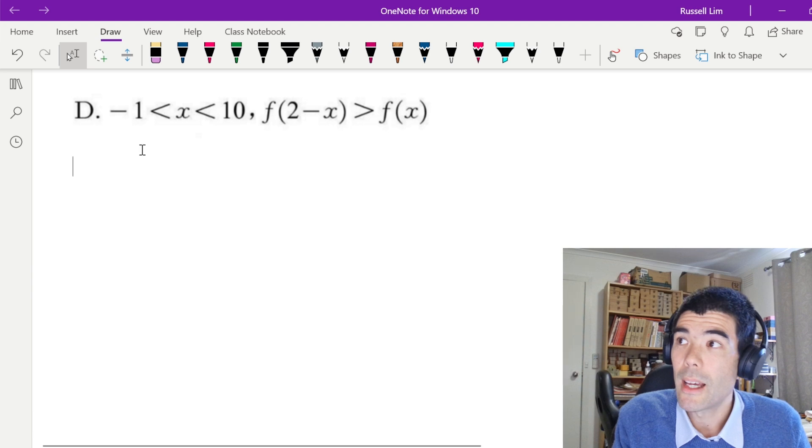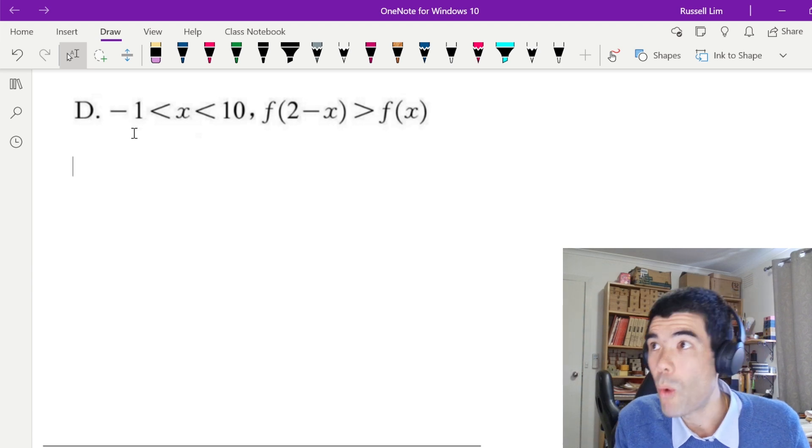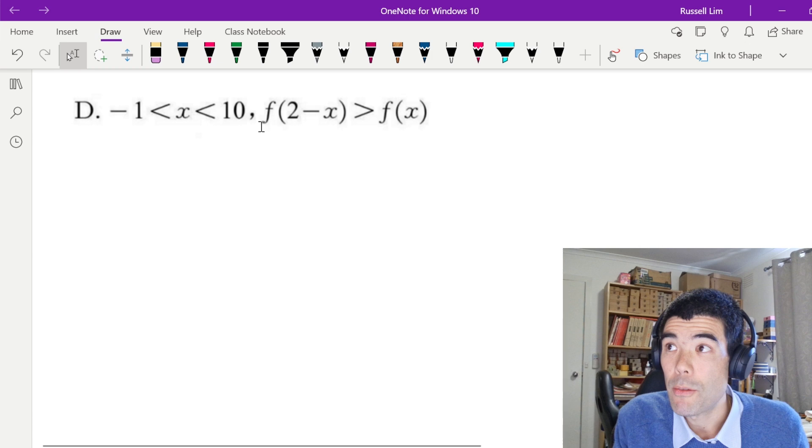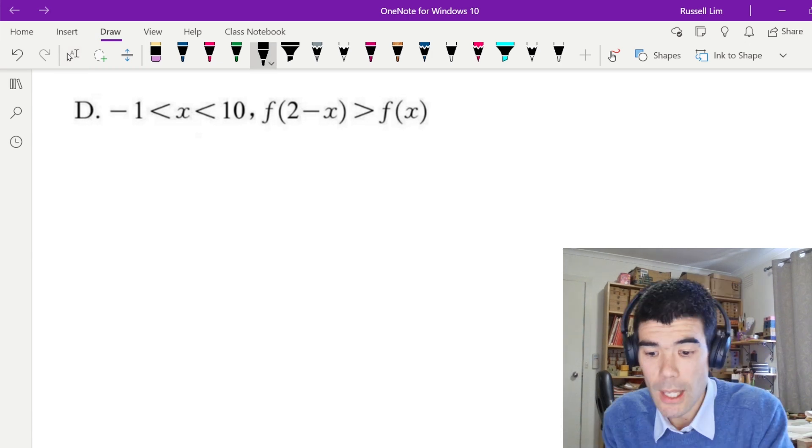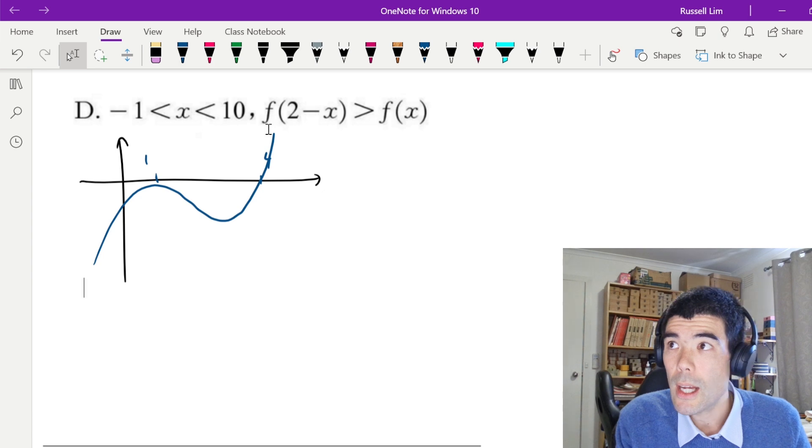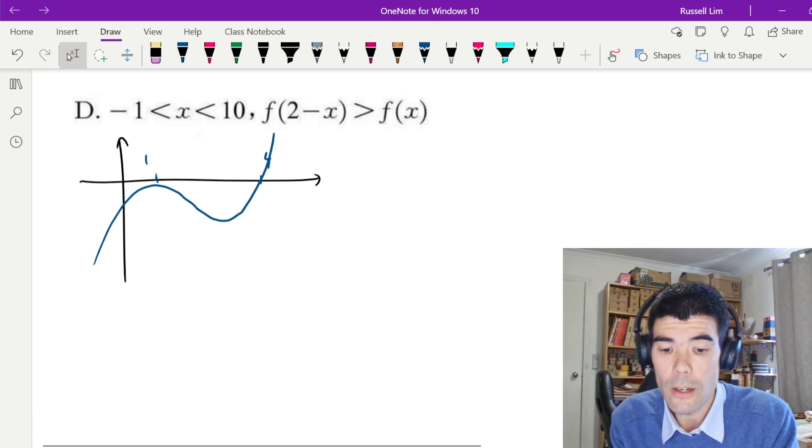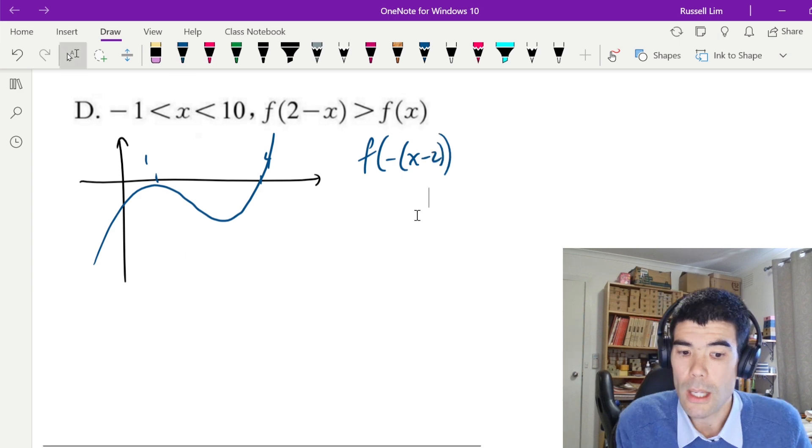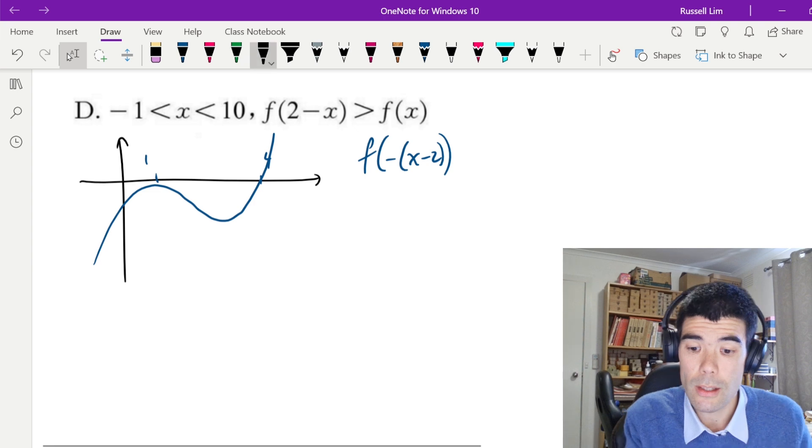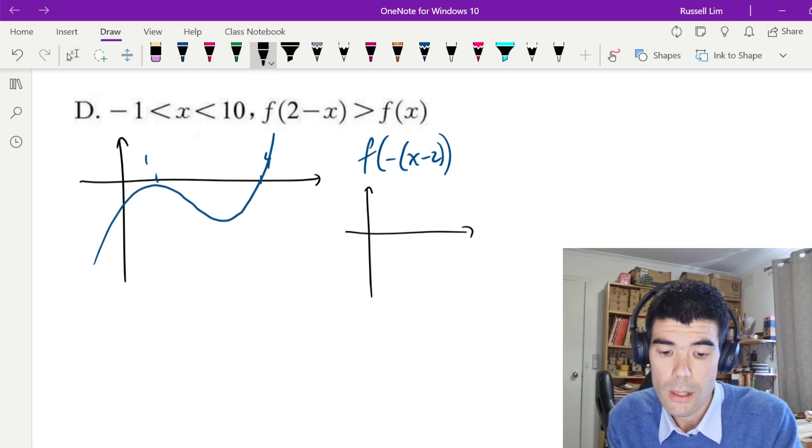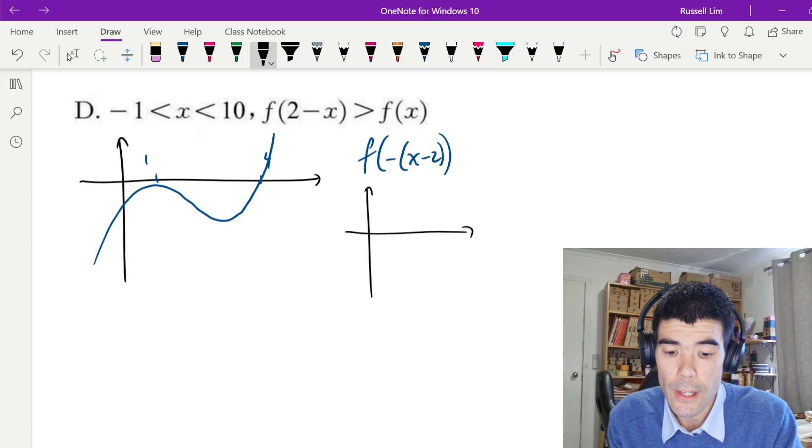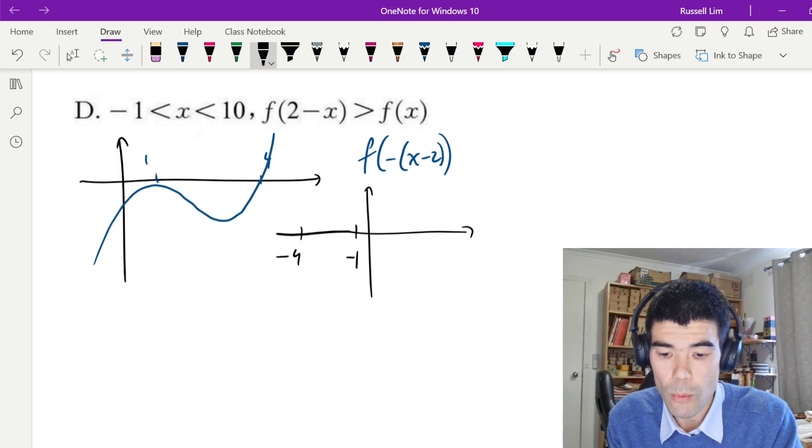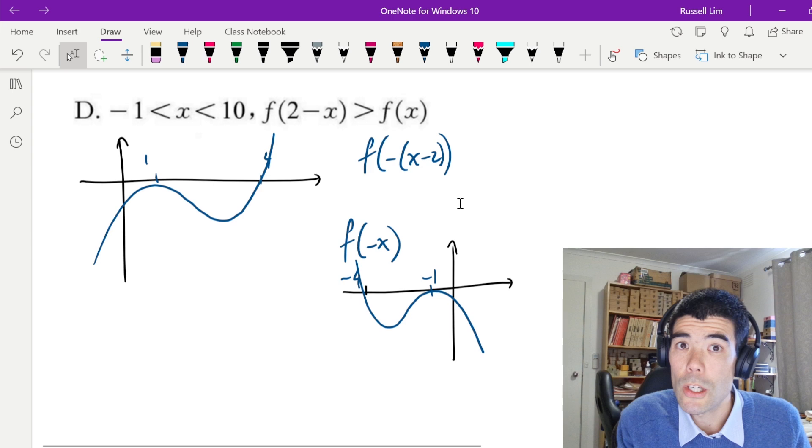Alright, so time to look at our last option now. When x is between -1 and 10, is the graph of f(2 - x) greater than the graph of f(x)? So let's sketch the graph one last time. And the function f(2 - x), well, I can rewrite that as f of -(x - 2). So what we're going to be doing is reflecting in the y-axis, then shifting two units to the right. Again, I'll do it in two steps. So the reflection first, I'm going to go to -4, -1, and then we're going to shift two units to the right.